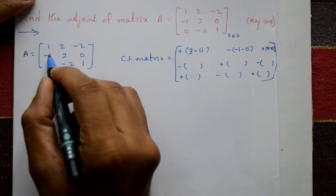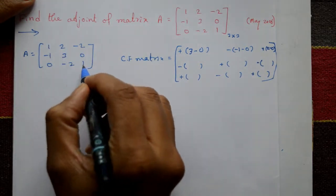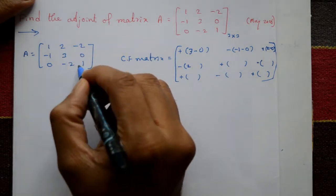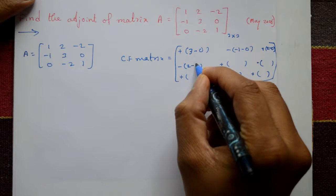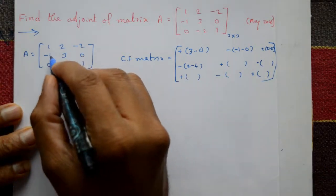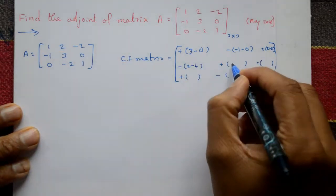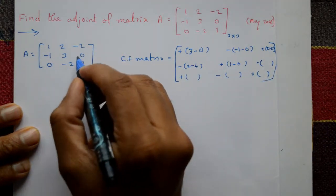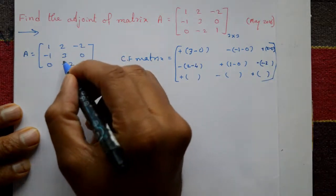Next element minus 1, cofactor of minus 1: first column, second row, remaining elements multiply — 2 into 1 is 2, minus sign, minus 2 into minus 2 is plus 4, giving minus 4. Next, cofactor of 3: second row, second column, remaining four elements — 1 into 1 is 1, and this is 0. Next, cofactor of 0: 1 into minus 2 is minus 2, and this is 2, and this is 0.